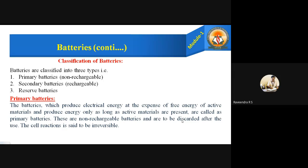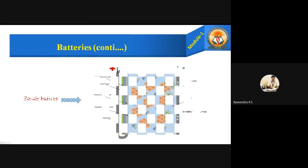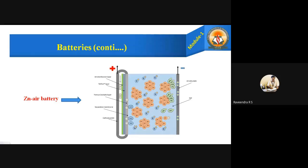Primary batteries explanation: why are primary batteries called non-rechargeable? The batteries which produce electrical energy at the expense of free energy of the active materials, and produce energy only as long as the active materials are present, are called primary batteries. These are non-rechargeable batteries and are to be discarded after use. The cell reaction is said to be irreversible. Examples include the dry cell and the zinc-air battery.